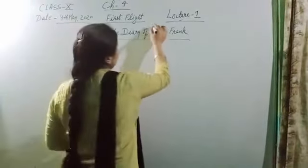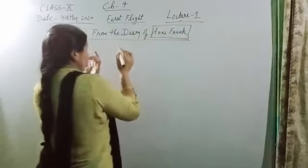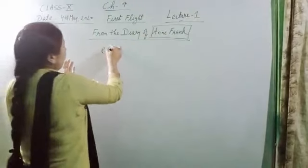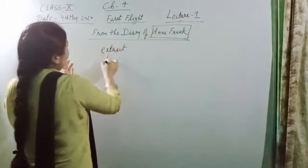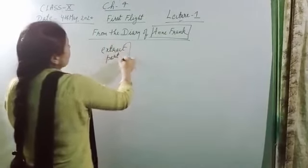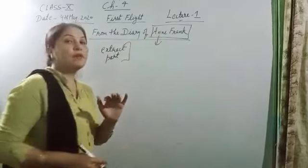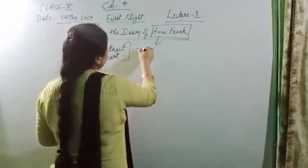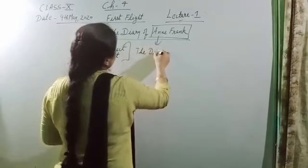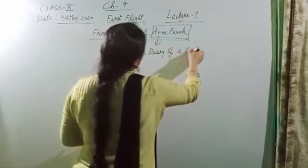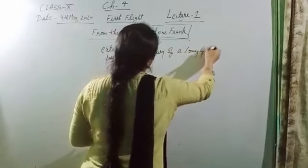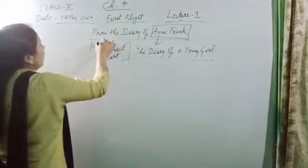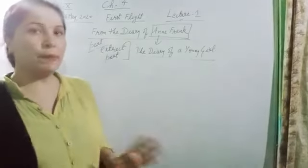From the Diary of Anne Frank - this is not a complete chapter, this is an extract, a part taken from the diary. The diary is written by Anne Frank, and the name of the diary you must know is 'The Diary of a Young Girl.' From this diary, this part is taken - it is not the complete diary, only a small part.